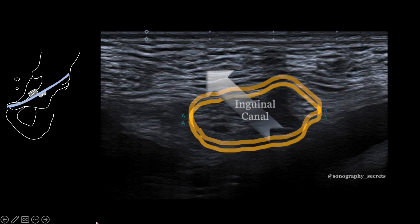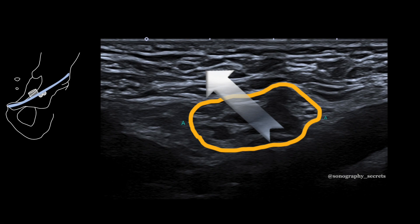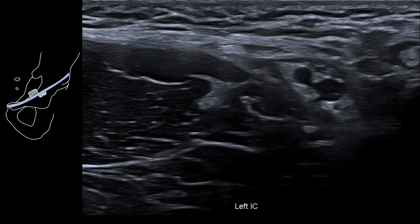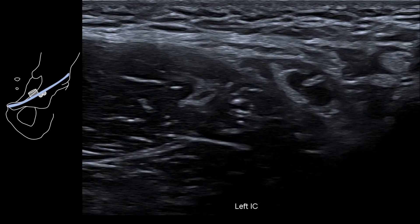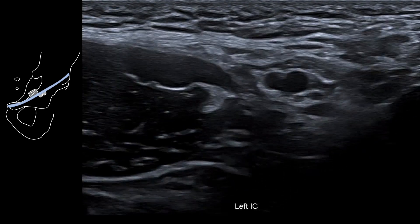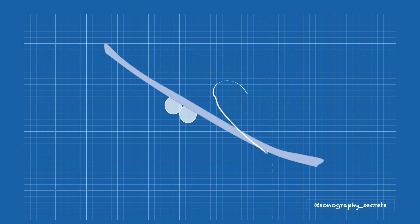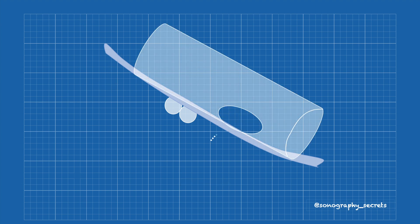We get the patient to strain or Valsalva, and we're looking for something to push through and distend the canal. Movement either side is normal, but if we have movement through the canal, then we have a hernia. From here, it's simply a matter of determining whether this comes lateral to the epigastric — that is, we have an indirect inguinal hernia — or medial to the epigastric, that is, a direct inguinal hernia.